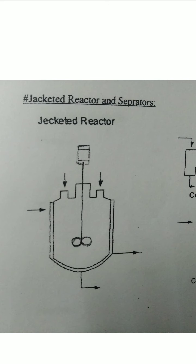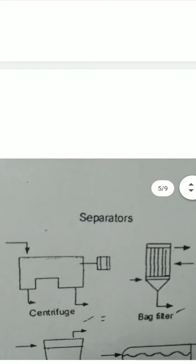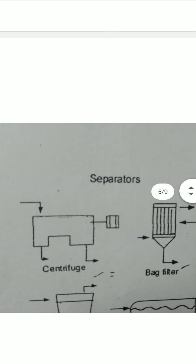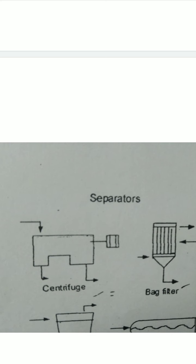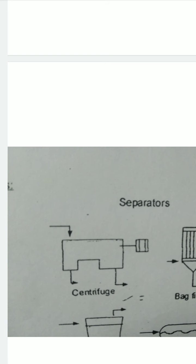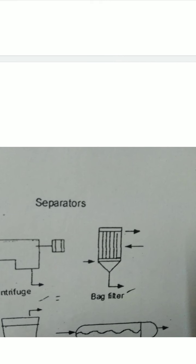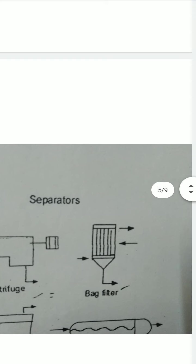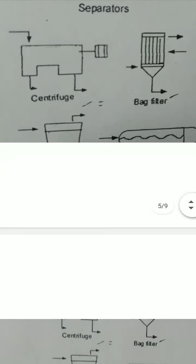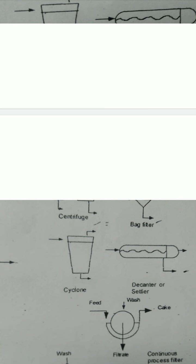We also take separators. Separators include the centrifuge. The centrifuge is used in flow charts to show centrifugal separation of materials. You can see here the symbol of the centrifuge.